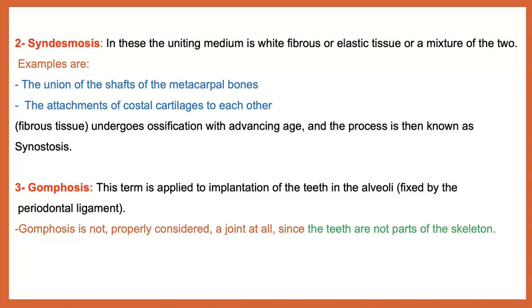Also, the attachment of the costal cartilage will be syndesmosis. Over time, this joint becomes ossified, which is called synostosis. The third type of fibrous joint is gomphosis.